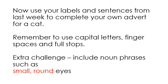Use your labels and your sentences from last week to complete your own advert. I want everybody to remember to use capital letters at the start of a sentence, finger spaces between words, and full stops at the end. And there's a little extra challenge for today — include some noun phrases. Instead of just saying the cat needs to have eyes, describe what those eyes look like. I put small, round eyes. Think about what a cat must have: he must have ears — what sort of ears? He must have a tail — what sort of tail? He must have claws — what sort of claws? See if you can use some adjectives to describe those nouns. That's your little extra challenge for today.